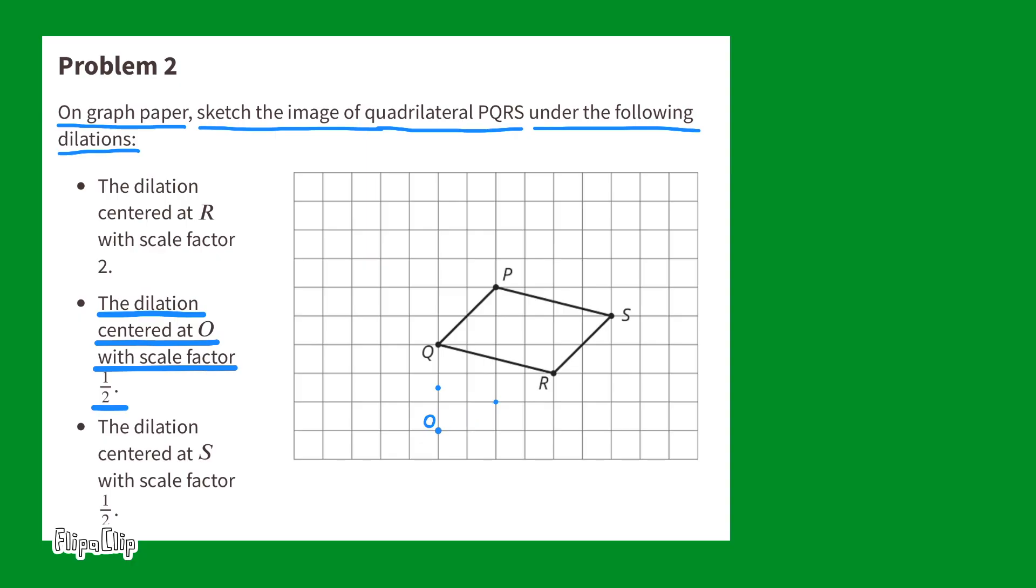Next, I'll draw a point halfway between point O and point P. And last, I'll put a point halfway between point O and point S. Once I've marked all the points for the dilation, I can connect the points so you can see what a dilation with a scale factor of one half looks like.